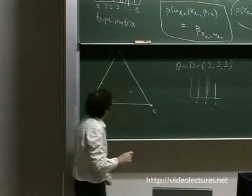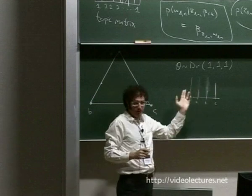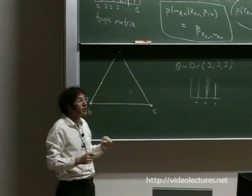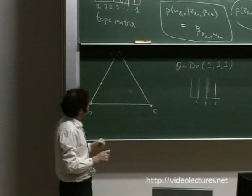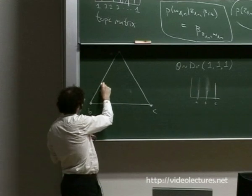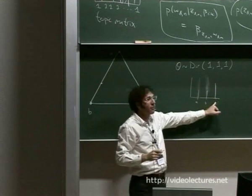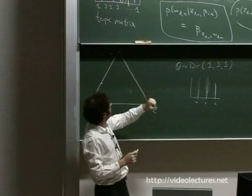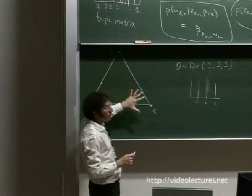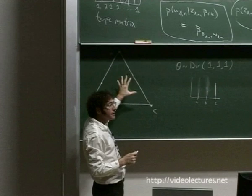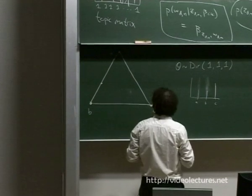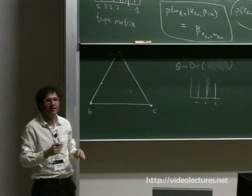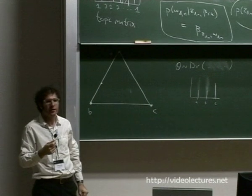The sum of the alphas determines the peakiness of the Dirichlet. When the sum of the alphas is small, the Dirichlet is very spread out. The greater the sum of the alphas, the more peaked the Dirichlet becomes at its expectation. An alternative parameterization uses M — the mean, a point on the simplex — and S, the scaling parameter which determines peakiness around the mean. This foreshadows lectures on nonparametric Bayesian methods where you parameterize the infinite-dimensional Dirichlet in precisely the same way.